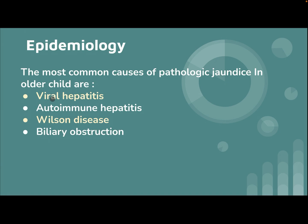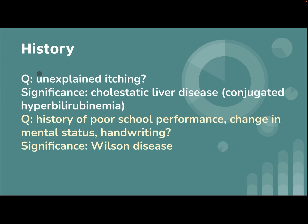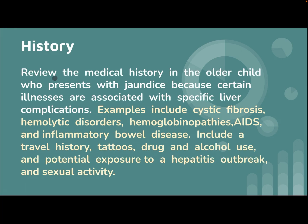Epidemiology: the most common causes of pathologic jaundice in the older child are viral hepatitis, autoimmune hepatitis, Wilson disease, and biliary obstruction. History of unexplained itching is significant for cholestatic liver disease with conjugated hyperbilirubinemia. History of poor school performance, change in mental status, and change in handwriting are significant for Wilson disease.